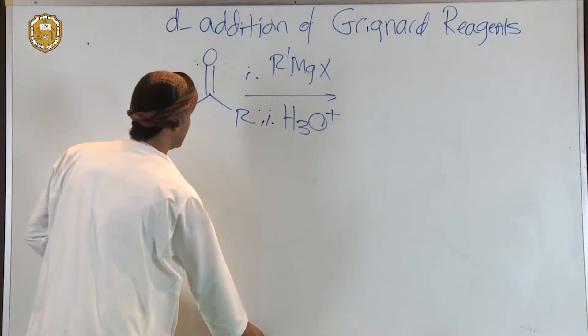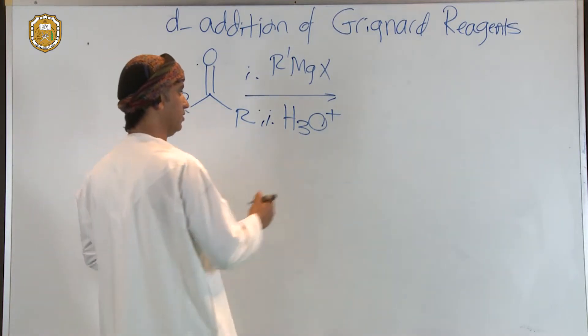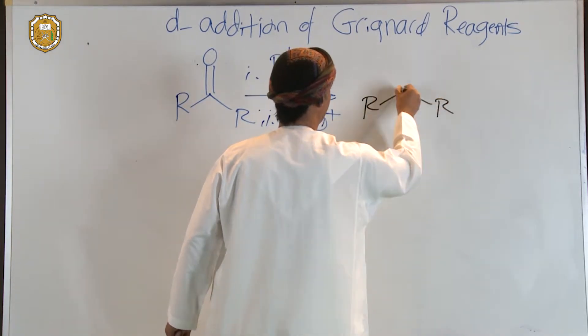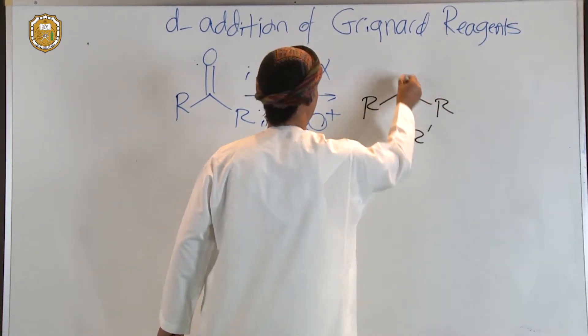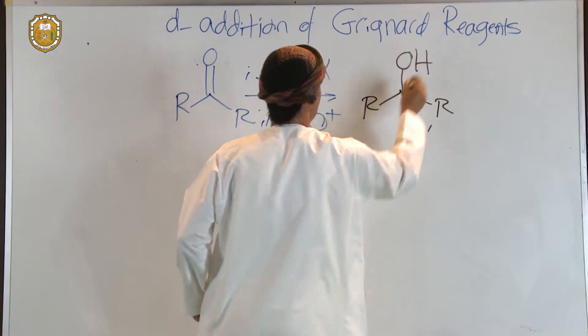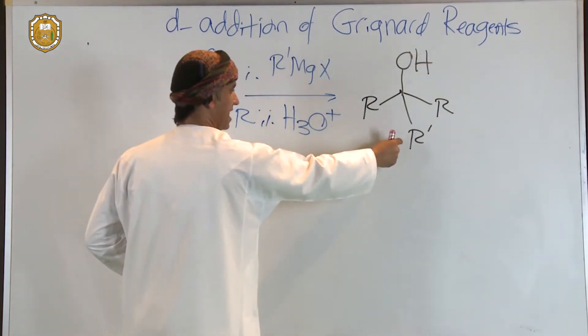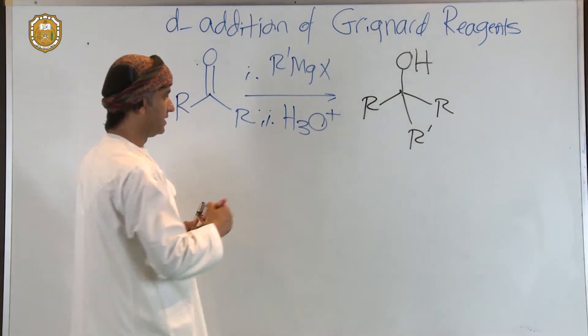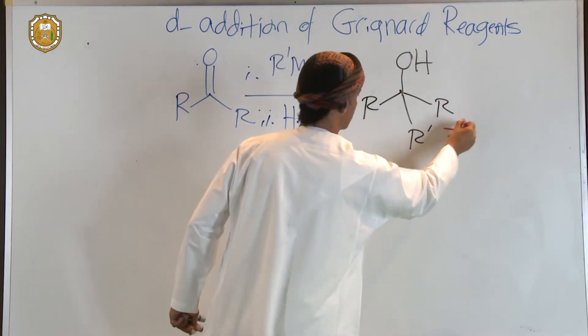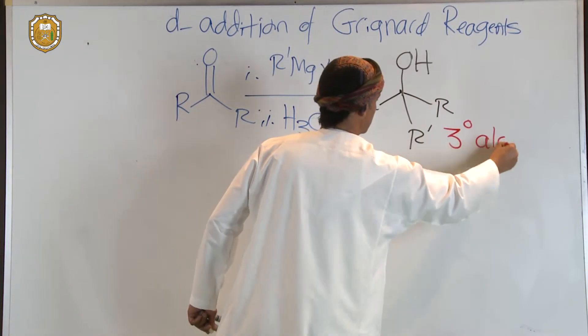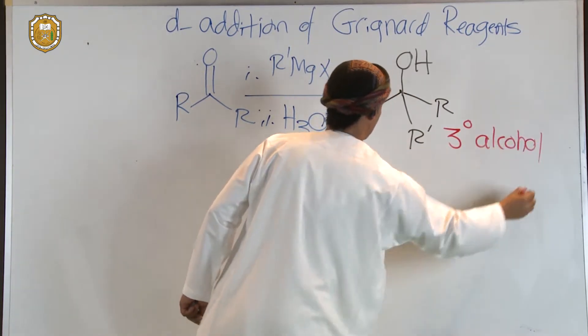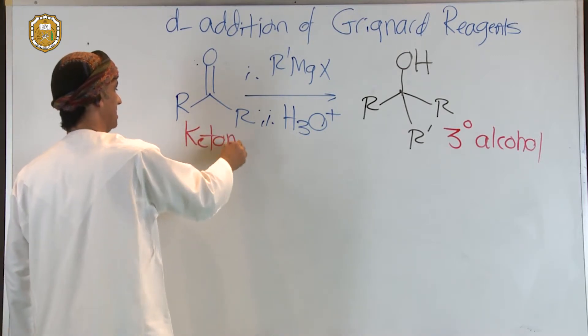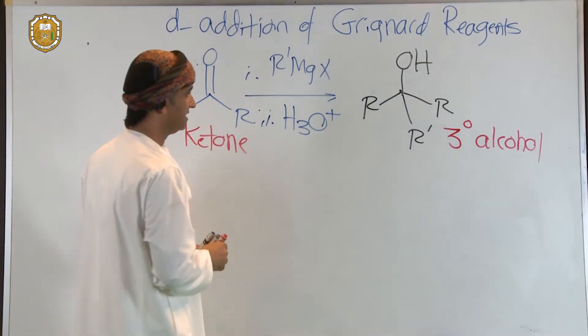What happens is that a tertiary alcohol is actually formed, and that R prime, this R prime, comes from the corresponding Grignard. So this is a tertiary alcohol, and of course we get tertiary alcohol if we start with a ketone.